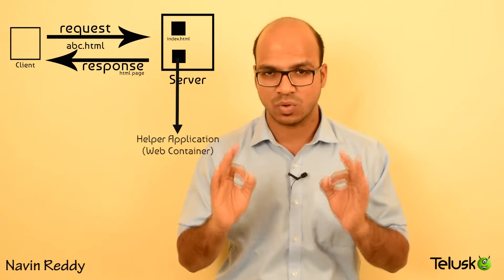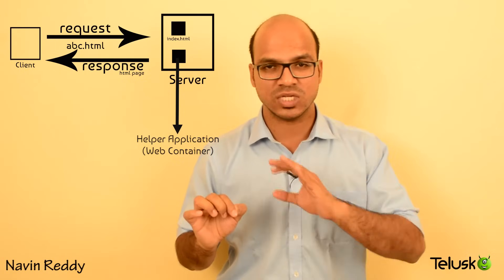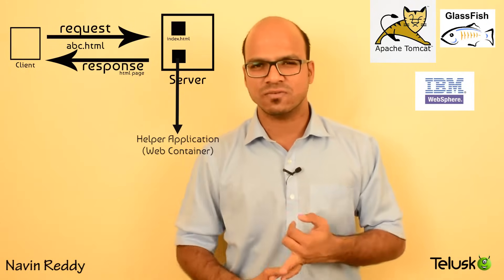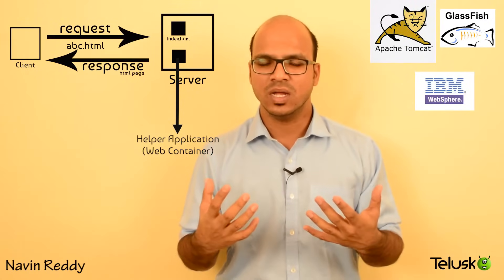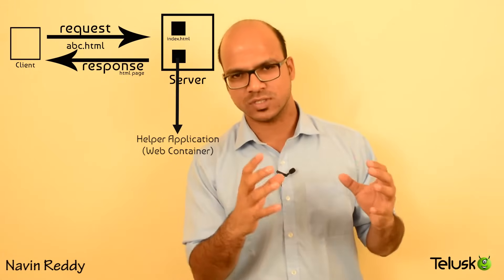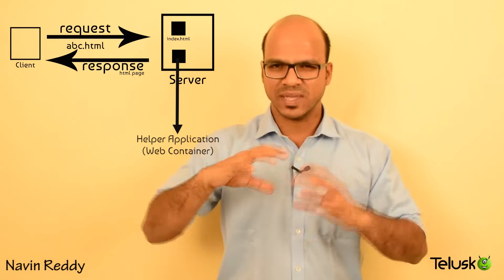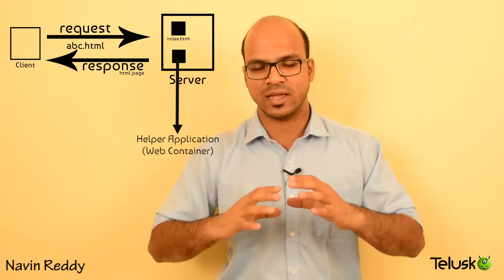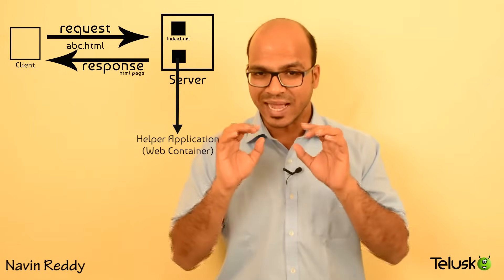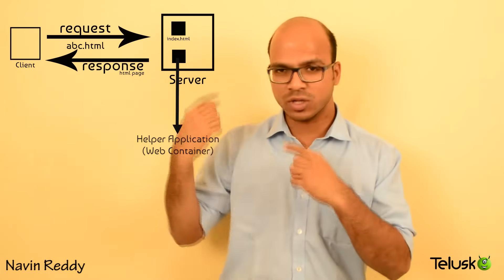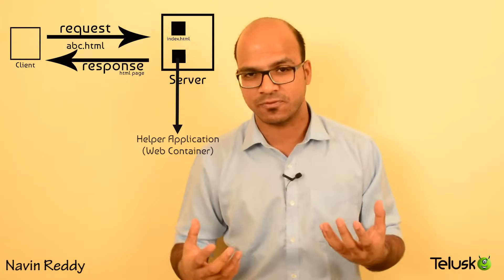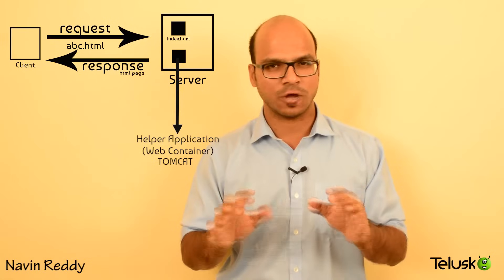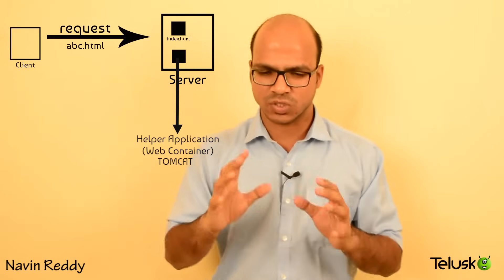So from the client side, the request goes to the server. Since it's a dynamic request, it goes to the web container. Web containers we can use include Tomcat, GlassFish, JBoss, and WebSphere — those are called app servers but they also have a web server feature. We always use Tomcat. If you want dynamic web pages on your server, you need to install Tomcat.